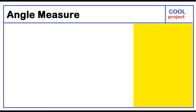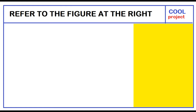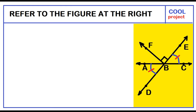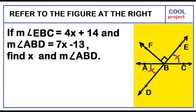How to find the measure of an angle. Refer to the figure at the right. If the measure of angle EBC equals 4x plus 14, and the measure of angle ABD equals 7x minus 13, then find x and the measure of angle ABD.